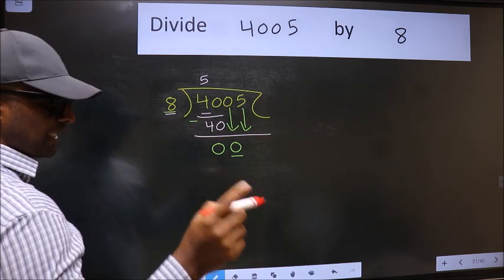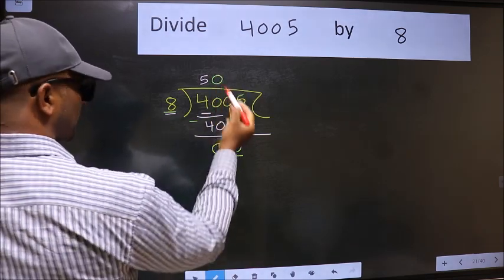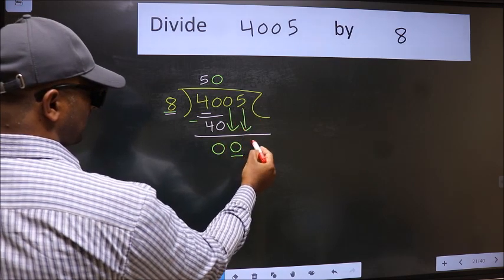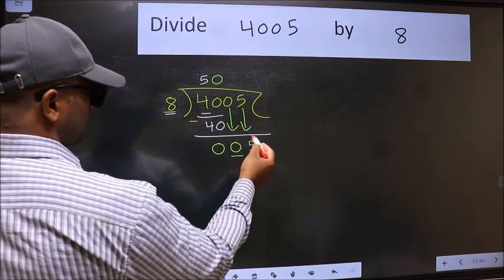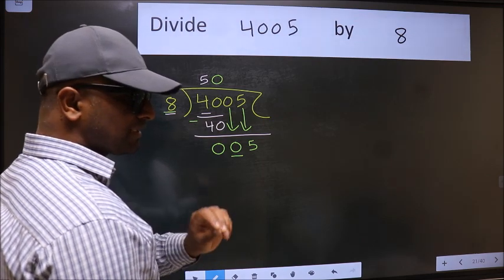And the rule to bring down second number is we should put 0 here. Then only we can bring this number down. After this step, the mistake happens. And the mistake is this.